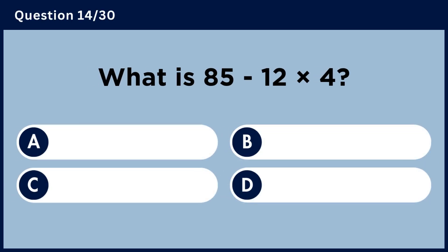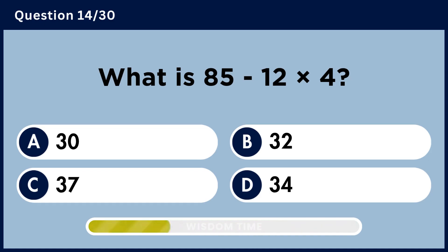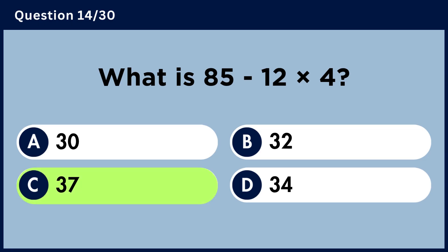What is 85 minus 12 multiplied by 4? Answer C, 37.